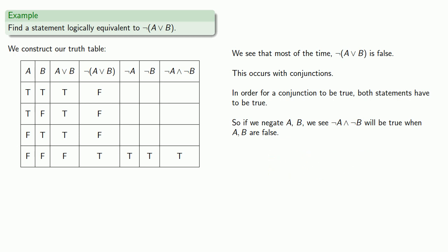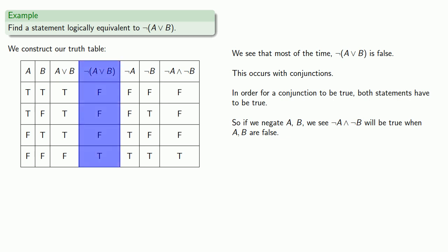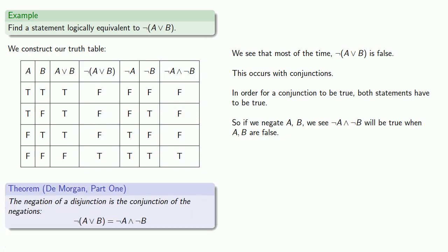Let's verify that by filling out the rest of the truth table. We see that the negation of a disjunction does have the same truth values as the conjunction of the negations. This leads to a very important equivalence usually known as De Morgan's Law, or at least De Morgan's Law Part 1: the negation of a disjunction is the conjunction of the negations. Not (a or b) is the same as not a and not b.